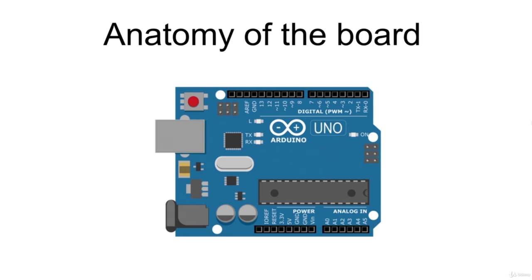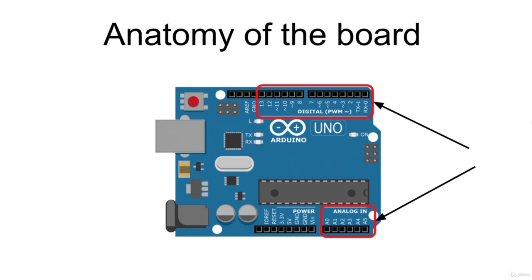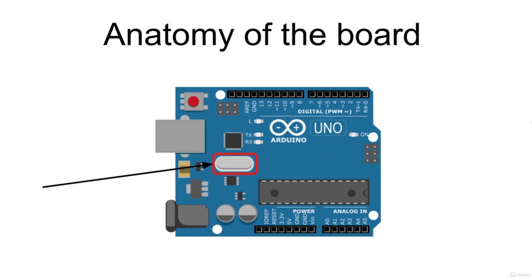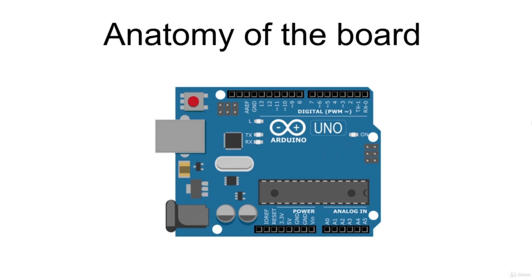Arduino Uno is a microcontroller board based on the ATmega328P microcontroller. It has overall 20 input-output pins, 6 of which can be used as analog input to read values from real-life sensors, and 14 digital pins that can be used both as input or output. The other main components of the board are a 16 MHz crystal oscillator, a USB connection, a power jack, the power pins, some status LEDs, and a reset button.